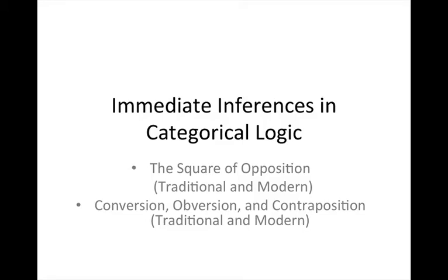Hi, so we've already had a conversation about the details of immediate inferences in categorical logic. We've discussed the traditional and modern square of opposition, as well as other immediate inferences on both interpretations. But I want to take some time now to hone in on these inferences exclusively. Our initial discussion involved the basics, the mechanics of the categorical proposition, and then we began to deploy those mechanics in talking about the logical structure of the propositions and what sorts of inferences you can make.